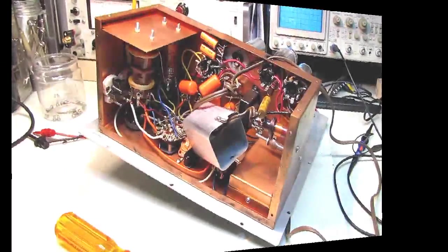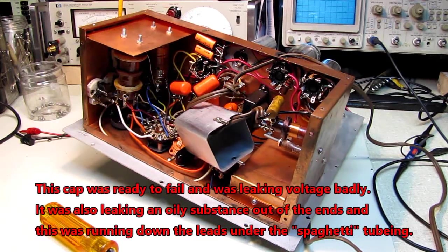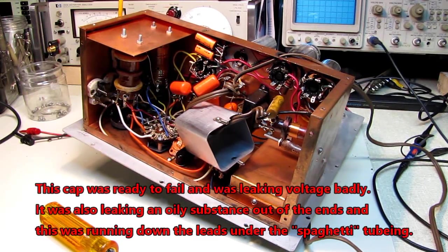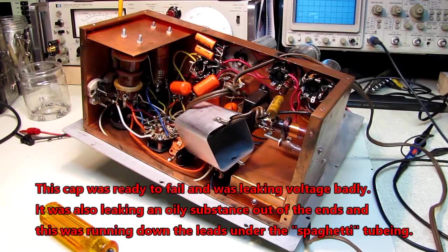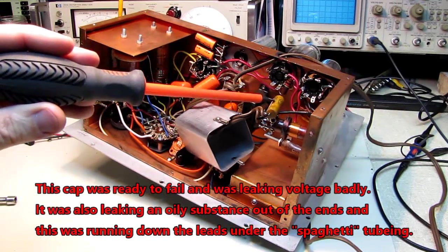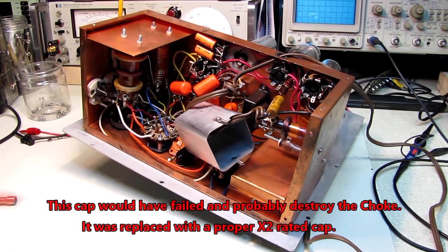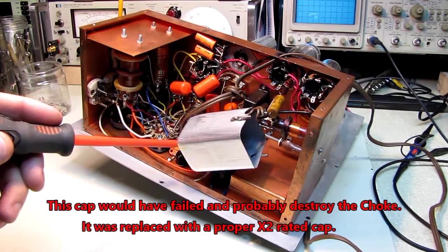We pull the shield off the line cord filter and found us another paper capacitor right across the line that has to go. I've seen what happens when those explode. In fact I've showed you what happens when those explode in one of the signal generators I rebuilt - the whole inside of the thing was full of soot.